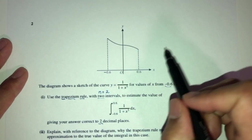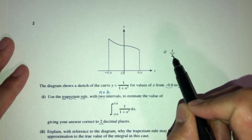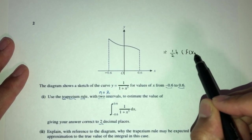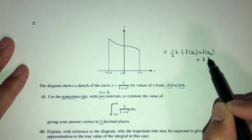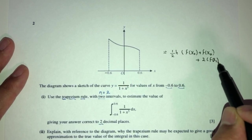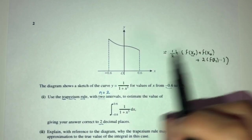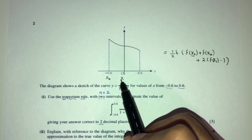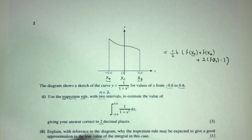The trapezium rule formula is: Area ≈ (1/2)h × [f(x₀) + f(xₙ) + 2·f(x₁) + ...]. Here x₀ is the first value and x₂ is the last value. With 2 intervals, the width h is 0.6. Plugging in: (1/2)(0.6)[f(−0.6) + f(0.6) + 2·f(0)].